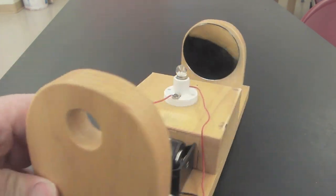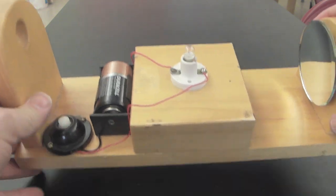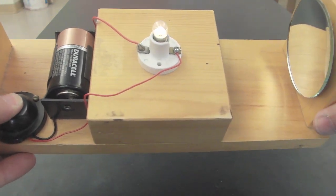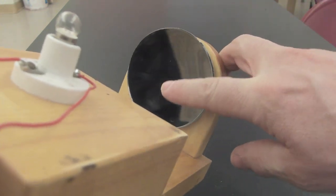Here's the eyepiece. This is what you look through. And when we push this button down, this light goes on. And at this end, we have a concave mirror.